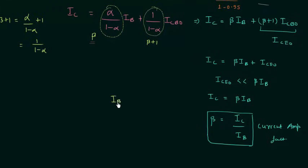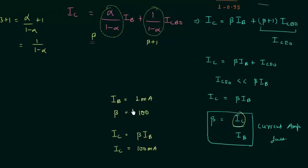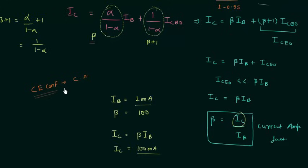For example, if the base current IB equals 1 mA and the current amplification factor beta equals 100, then IC equals beta times IB, so IC equals 100 mA. The input current was 1 mA and the output current is 100 mA, so there is amplification of the input current. The common emitter configuration works as a current amplifier, whereas generally transistors work as voltage amplifiers because of the transferred resistor principle.